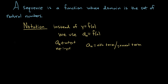You could say a_1 is the first term of the sequence, a_2 is the second term, and so on. Sometimes we start with a_0, which could be the 0th term, etc.